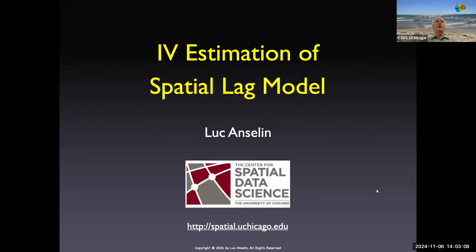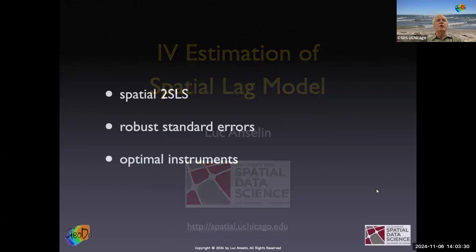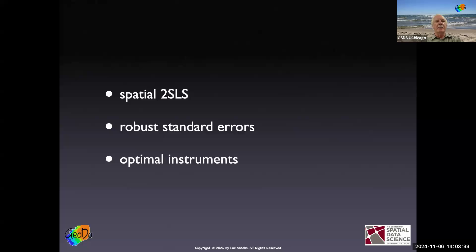We saw before how to estimate the spatial lag model with maximum likelihood. The main problem was the endogeneity of the spatially lagged dependent variable. But we've already talked about how two-stage least squares and instrumental variables address endogeneity. Now we're going to apply these same principles to the endogeneity in the spatial lag model. That gives us what I call a spatial two-stage least squares estimator, which is in essence just the same two-stage least squares estimator that we've had before. The only difference is that the spatial structure of the model gives us very specific instruments.